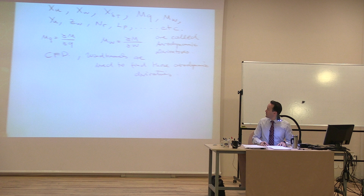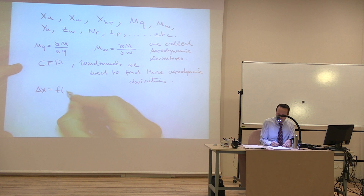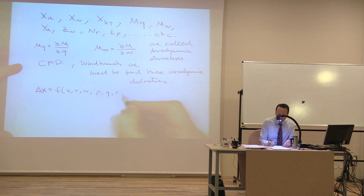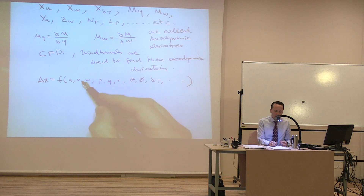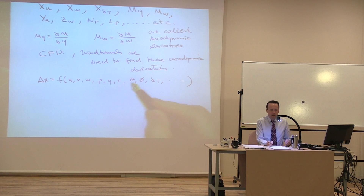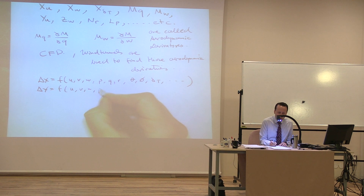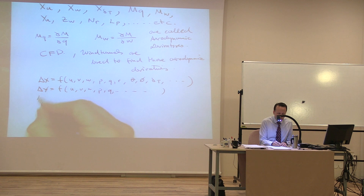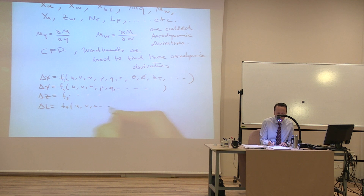What we've established is that del X is a function of many things: u, v, w, p, q, r, theta, phi, delta, and so on. You've seen it's not a big function of v, the side velocity, and probably not a big function of r and q, theta, phi. Similarly, delta Y has a similar function with u, v, w, p, q, r, and so on. The same for delta Z, and you have a similar thing for delta L, M, N — they're all functions of different things.